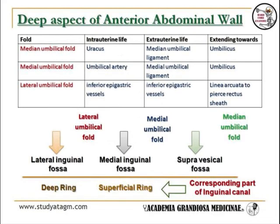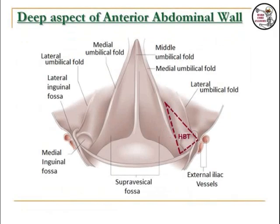Deep internal aspect of the anterior abdominal wall: the peritoneum overlying the corresponding structures forms folds on the internal aspect. The middle umbilical fold is formed by the median umbilical ligament, which is a derivative of the urachus. The medial umbilical fold is formed by the medial umbilical ligament, which is a derivative of the umbilical artery. The lateral umbilical fold is formed by the inferior epigastric vessels. The fossa between the middle and medial umbilical folds is called the supravesical fossa. The fossa between the medial and lateral umbilical folds is called the medial inguinal fossa and corresponds to the superficial inguinal ring on the external surface. The fossa lateral to the lateral umbilical folds is called the lateral inguinal fossa and corresponds to the deep inguinal ring.